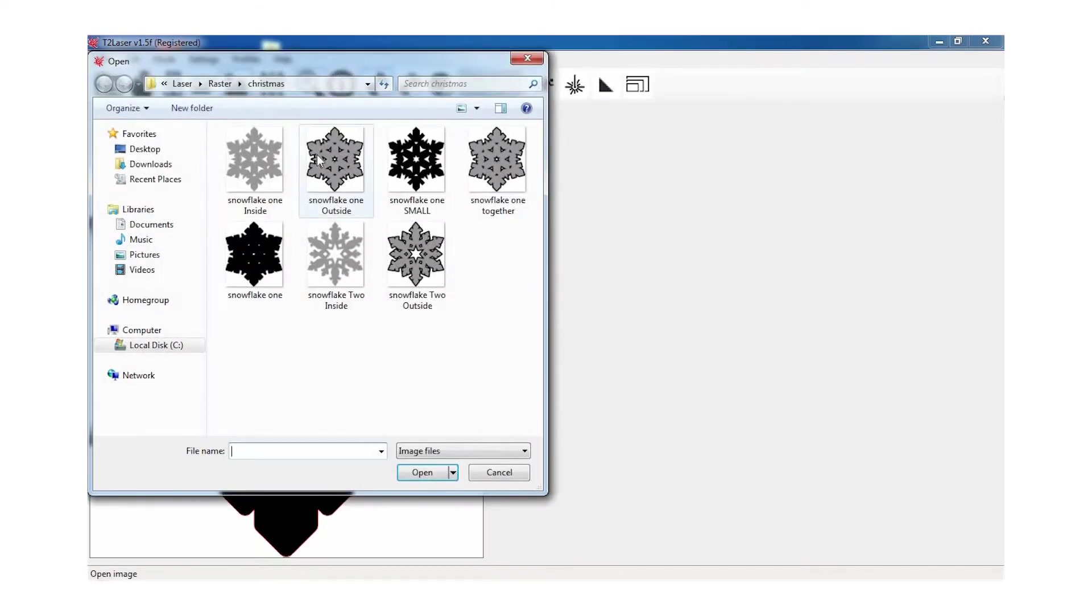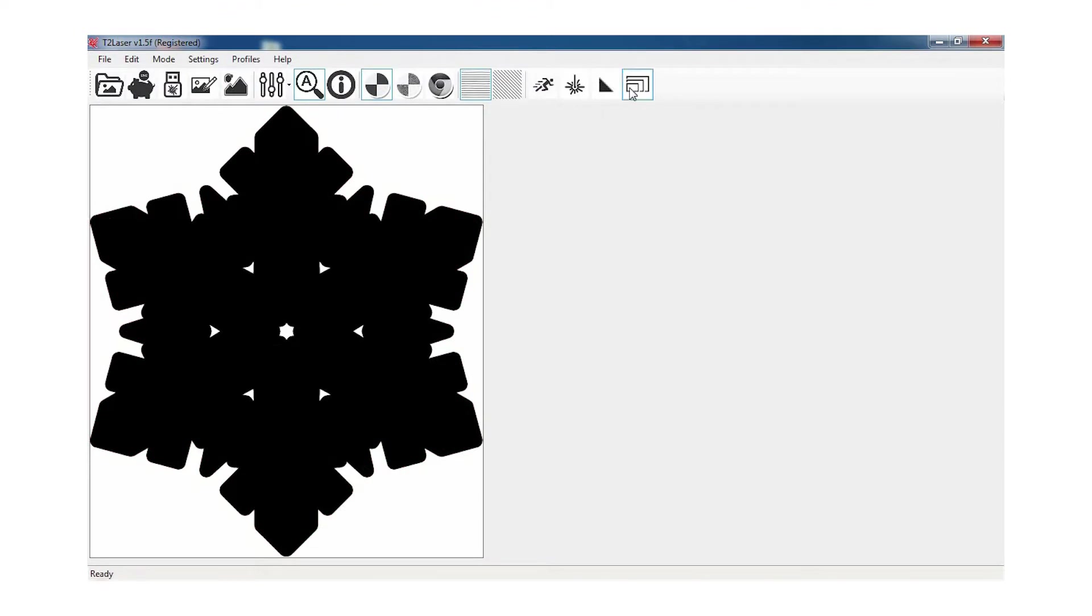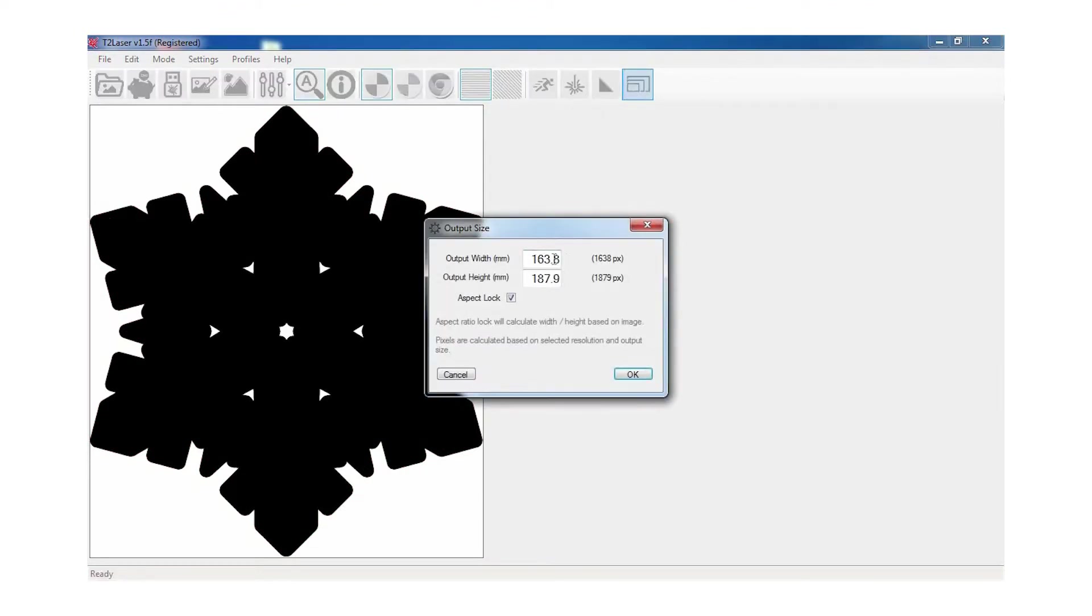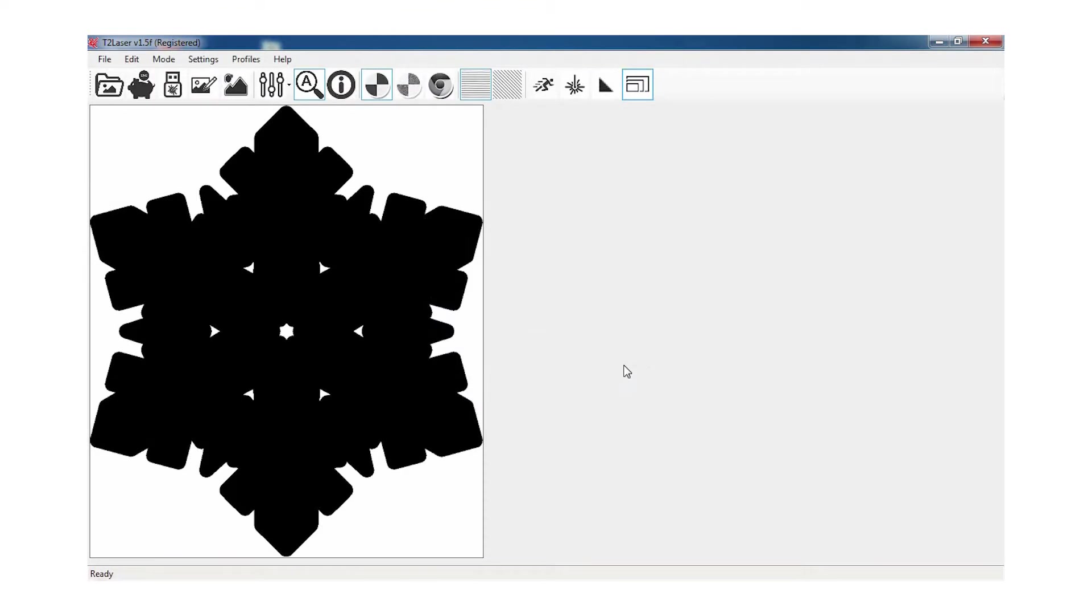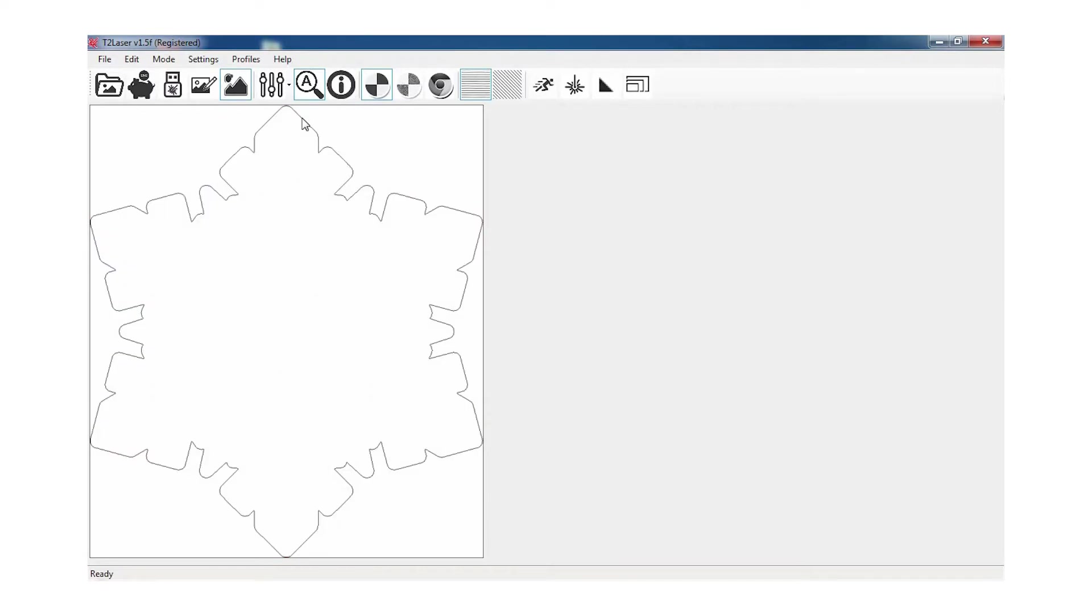Now let's go ahead and cut out the inside or larger snowflake that the two outside pieces are glued to. I'm going to set this larger snowflake to 81, being that the smaller 78 millimeter snowflakes fit within this just fine with a nice border. Once again, I'm going to hit it with the trace feature and then load it into T2 Laser to cut it out.